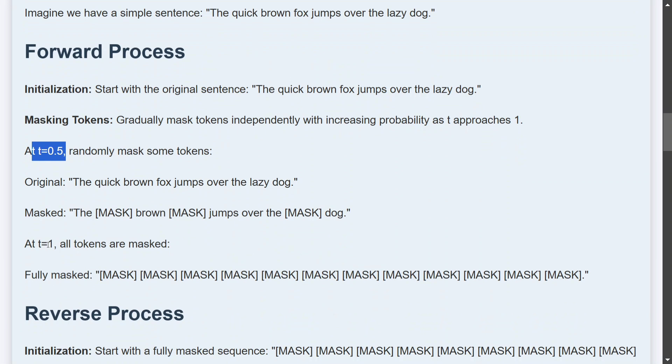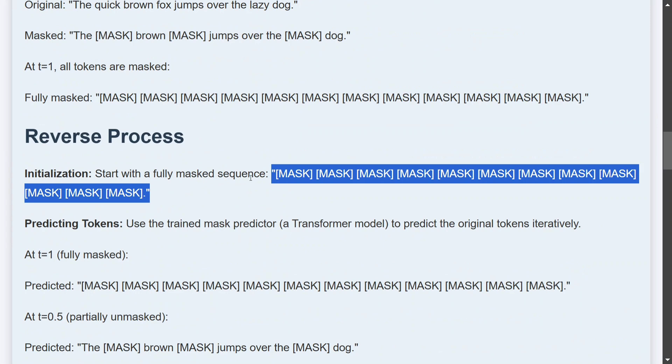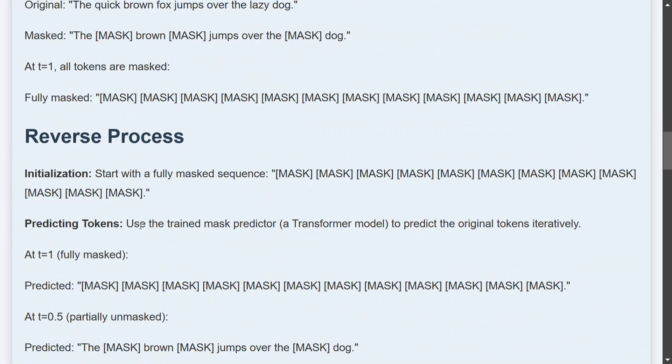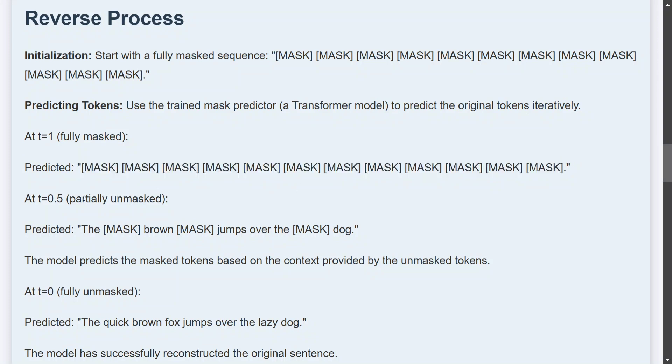Now in the reverse process, I think you might have understood, we'll start off with this particular task and then eventually start predicting the tokens. So at t equals to 1, this is completely masked, no word is shown. At t equals 0.5, we would start predicting the brown jump over the dog, and some masks are remaining.